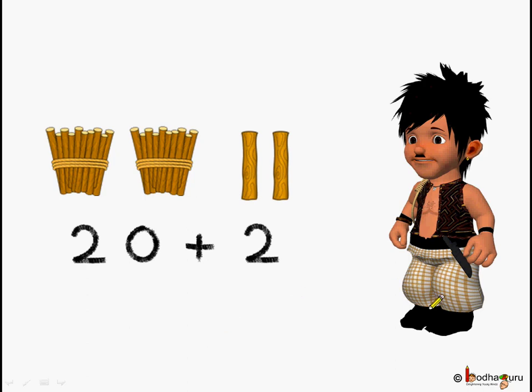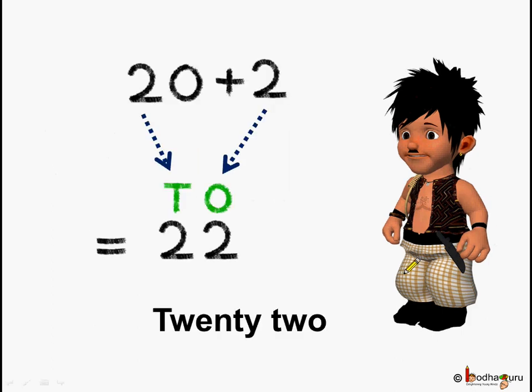this is Bola. Bola collected two bundles of tens and two loose sticks. So how many sticks did Bola collect? He collected 20 plus 2 sticks. Let us write it down in standard form. So 20 plus 2. Starting from the lowest value, how many ones are there? There are two ones and there are two tens.